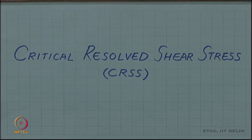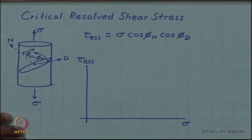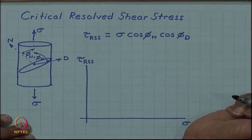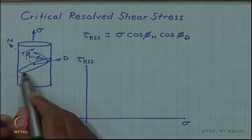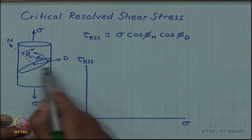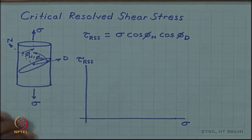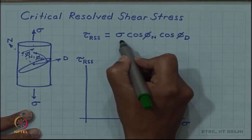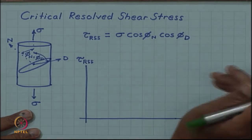In the last video we saw the concept of resolved shear stress. Now we will look at a related concept called critical resolved shear stress. Suppose we are loading a sample in uniaxial tension. On a slip plane inclined at an angle phi_n and a slip direction inclined at an angle phi_d, there is a resolved shear stress acting on the material given by the applied tensile stress times cos phi_n cos phi_d.